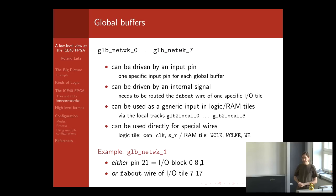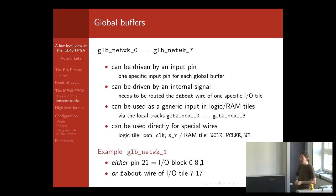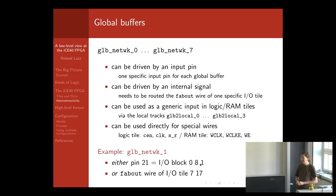There are 8 global buffers in the FPGA. They can connect to any input in any tile of the FPGA, but they can only be driven in specific ways: either by a special dedicated input pin (one per global buffer), or by routing some signal to a fab-out wire of one specific IO tile. For example, global buffer number 1 can either be driven by pin 21 — the clock input of the iCEstick — or by the fab-out wire of IO tile 7,17.